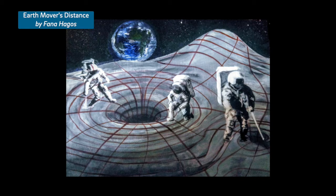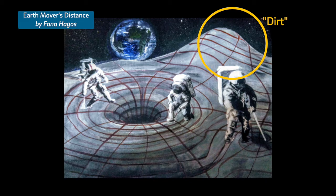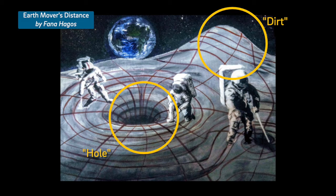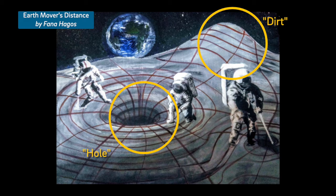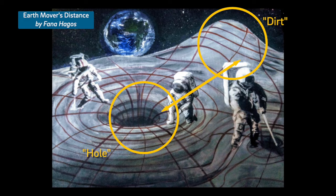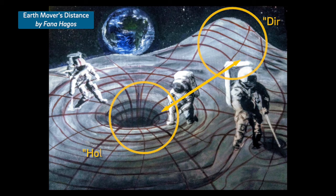The picture describes this very well using spacemen on the moon who are trying to move space material into a hole in the middle of the picture. It also nicely illustrates that you need to walk — which is the distance traveled — and there are different ways of walking described by the red lines. The shorter the red line, the less work you have; the longer the red line, the more work.